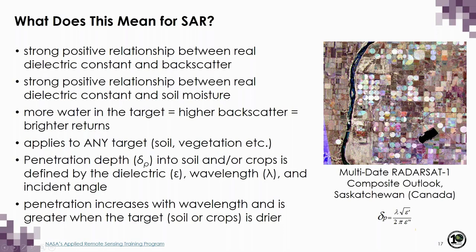A Radarsat-1 image over Canada shows very bright pivot irrigation returns, indicating higher soil moisture in those fields. Penetration depth into soil or crops is defined by dielectric constant, wavelength, and incidence angle. Penetration depth increases with wavelength — L-band penetrates further than X-band. Penetration is also greater when the target, whether soil or crops, is drier.